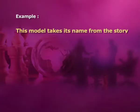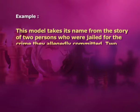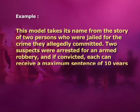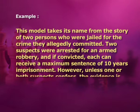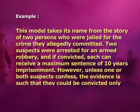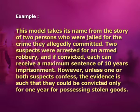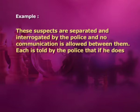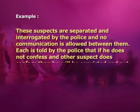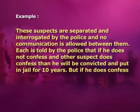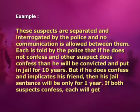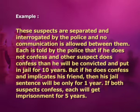One such example is Prisoner's Dilemma. This model takes its name from the story of two persons who were jailed for the crime they allegedly committed. Two suspects were arrested for an armed robbery, and if convicted, each can receive a maximum sentence of 10 years imprisonment. However, unless one or both suspects confess, the evidence is such that they could be convicted only for one year for possessing stolen goods. These suspects are separated and interrogated by the police, and no communication is allowed between them. Each is told that if he does not confess and the other suspect does confess, he will be convicted and put in jail for 10 years. But if he does confess and implicates his friend, his jail sentence will be only one year. If both suspects confess, each will get imprisonment for five years.